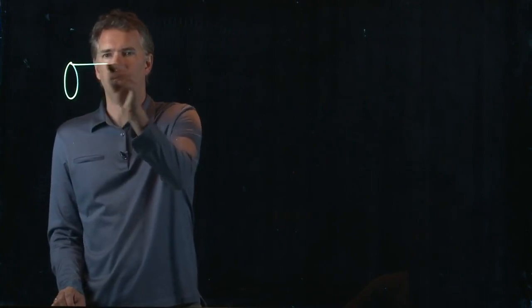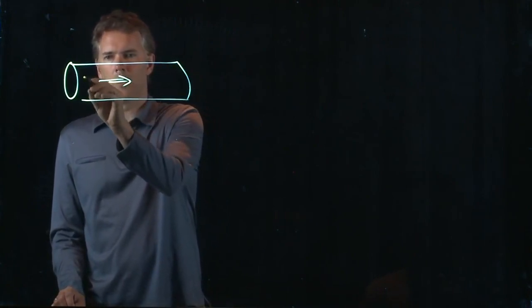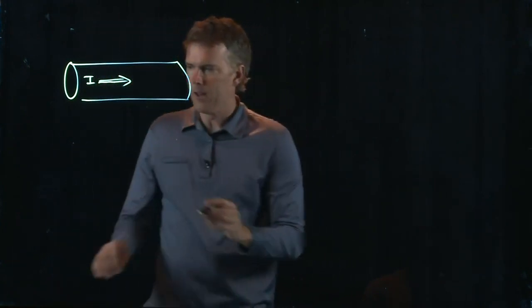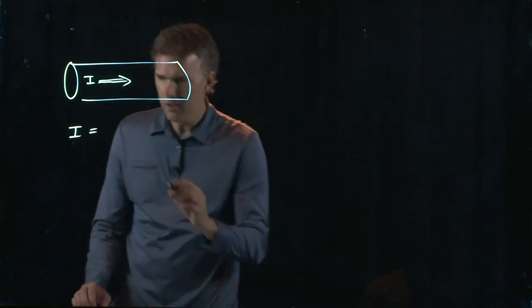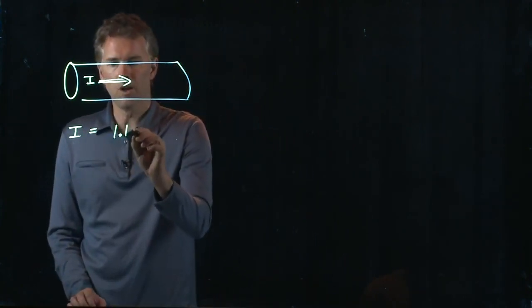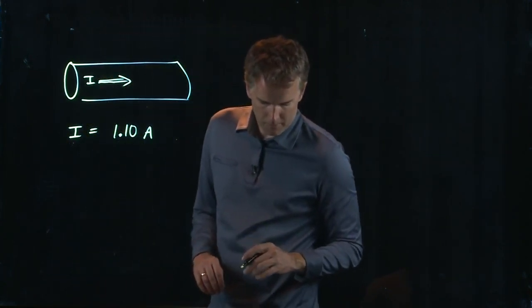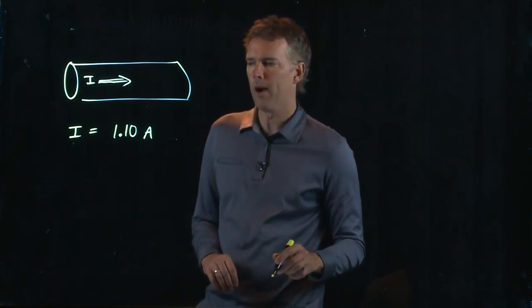All right, here's our wire. We've got current I, and it tells us that I, and we can use my numbers here just for fun, is 1.10 amps. And it wants to know how many electrons are flowing past any point in the wire per second.